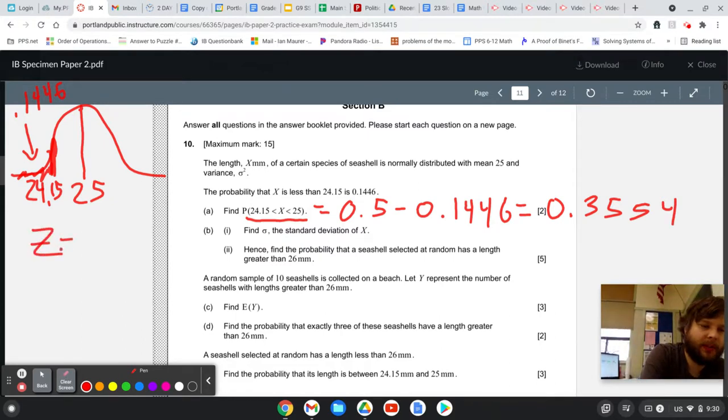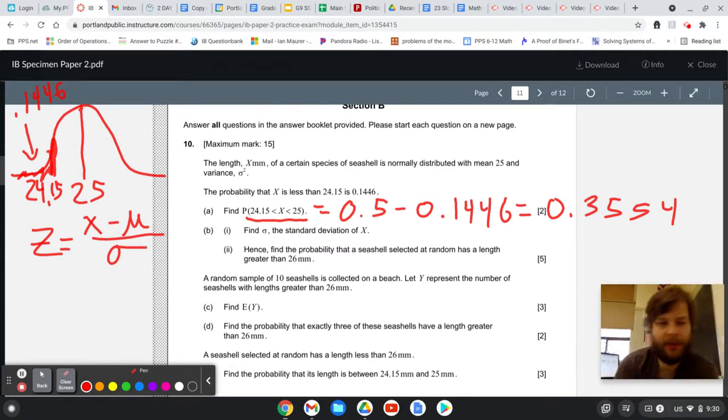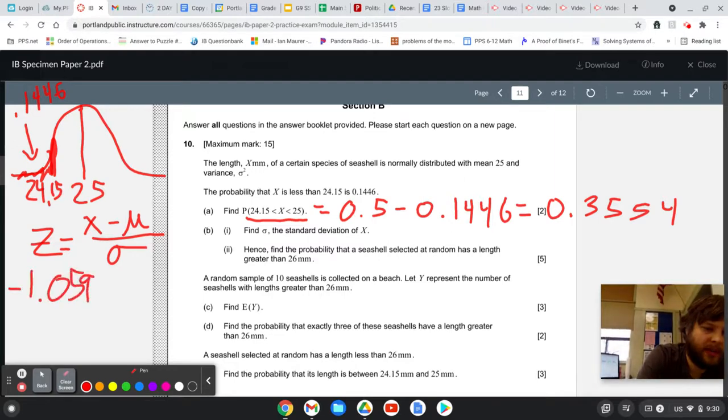So z is equal to your x-value minus your mean divided by your standard deviation. So putting in the information, the calculator tells me this, so that's negative 1.0599 equals the x-value. That means from our distribution, 24.15, the mu from our distribution is 25, the mean. The sigma is what we don't know.